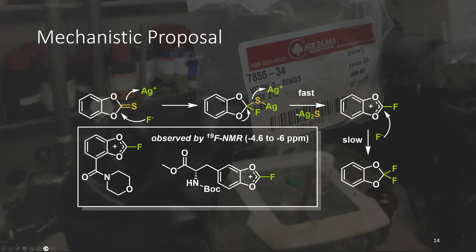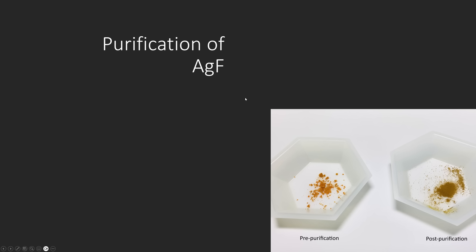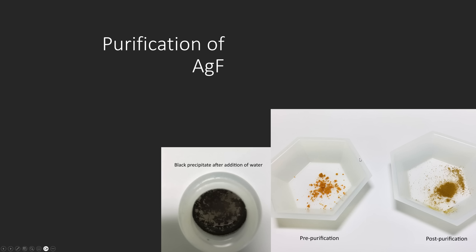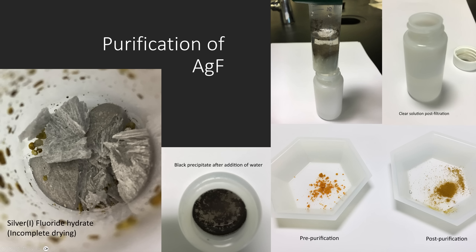We were also fortunate enough to observe these two intermediates, where the fluorooxonium was able to be observed by 19F NMR. For this specific chemistry with the difluorobenzodioxols, commercially available silver fluoride didn't work very well and it needed to be purified. Once purified, we were able to get this chemistry to be reproducible.